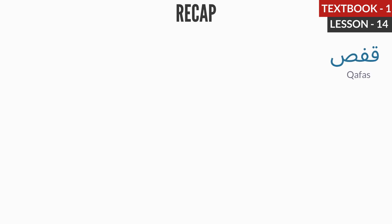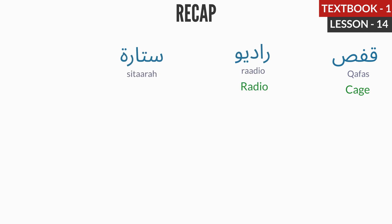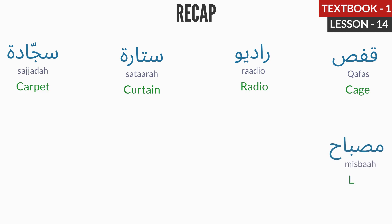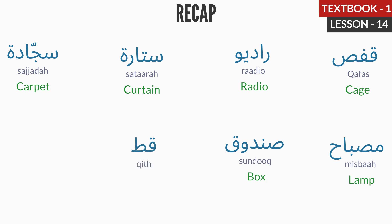Now let's have a recap. Kafas — Cage. Radiyo — Radio. Sitara — Curtain. Sajjada — Carpet. Mizbah — Lamp. Sunduk — Box. Kit — Cat. Tilfah — Television.